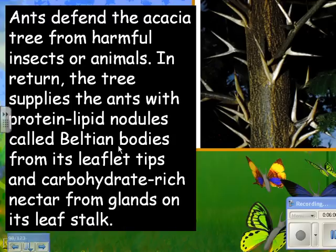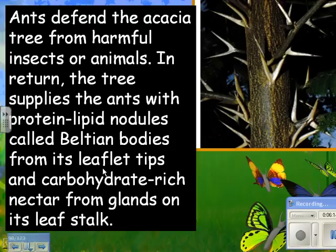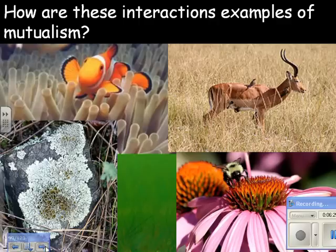This is called nitrogen-fixing bacteria in the root nodules of clover or other legumes. Here's another cool example: ants defend the acacia tree from harmful insects and animals; in return, the tree supplies the ants with protein-lipid nodules called Beltian bodies from its leaflet tips and carbohydrate-rich nectar from glands on its leaf stalk. The plant actually makes food for the bugs that protect it.